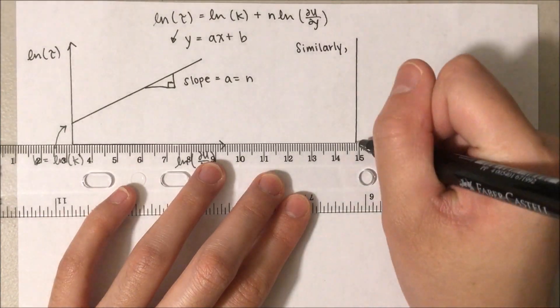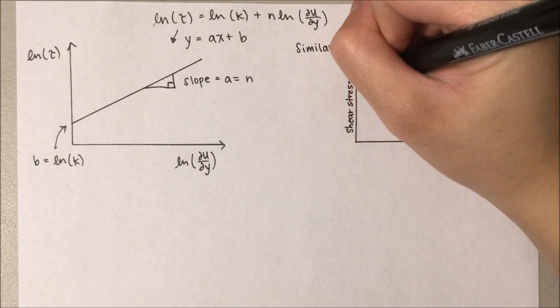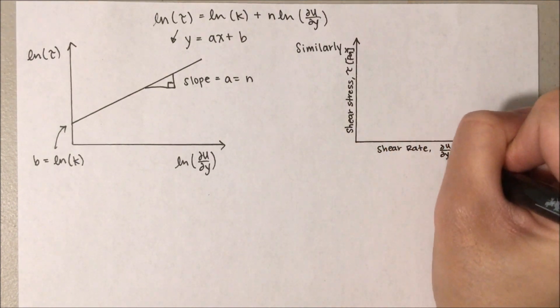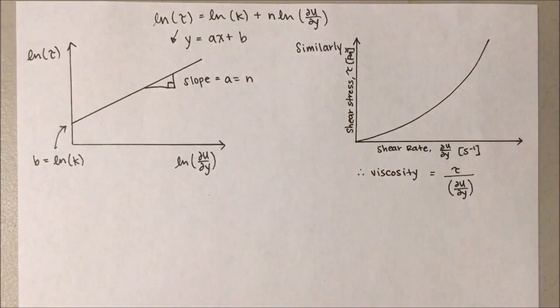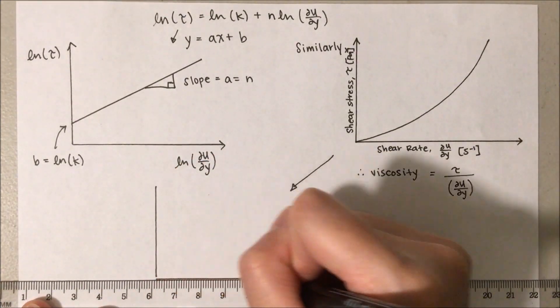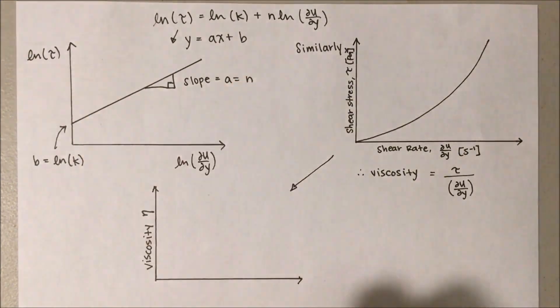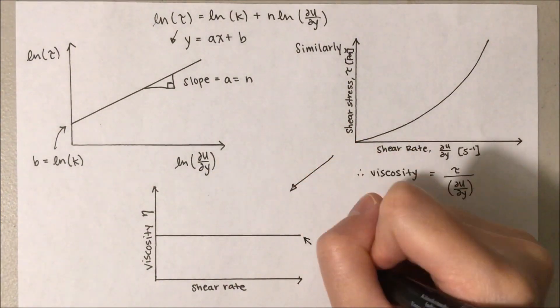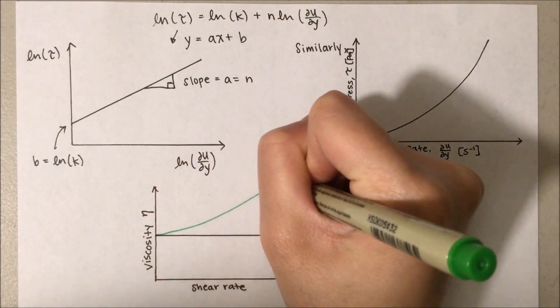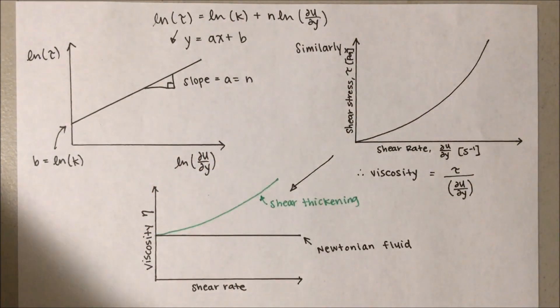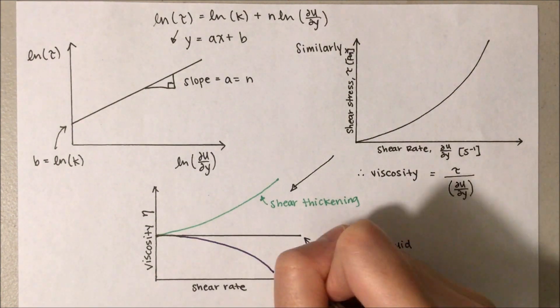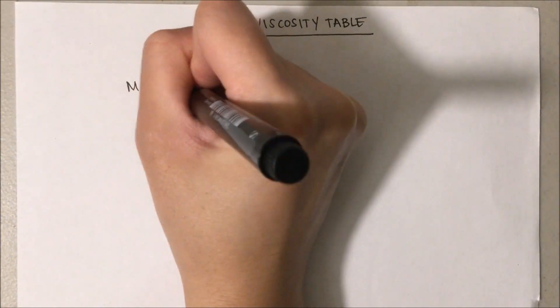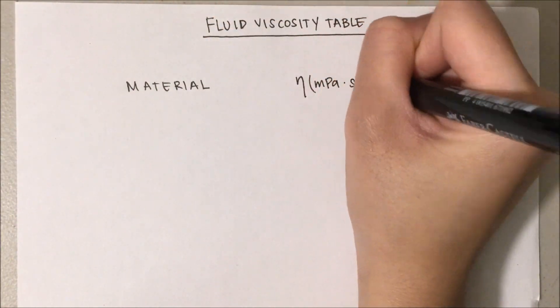This also applies to shear thickening fluids, where n is greater than 1. With known n value, we could easily calculate the apparent viscosity with respect to shear rate. As the following graph shown, the shear thickening fluid becomes more viscous and the shear thinning fluid becomes less viscous as shear stress is applied. Usually, a fluid with a huge range of apparent viscosity is non-Newtonian fluid. Here are some examples of fluid viscosity.